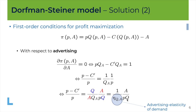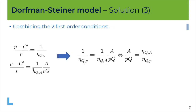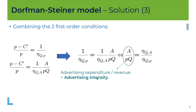Since the monopolist is choosing both price and advertising, at the optimum both first-order conditions must hold simultaneously. We have written them in the same form — with the same left-hand side — so if two equalities share the same left-hand side, their right-hand sides must be equal. Rearranging, we put the advertising intensity on the left-hand side. The advertising intensity is the ratio between advertising expenditure and revenue — price times quantity — giving a measure of what you can gain through advertising: for each euro spent in advertising, the corresponding sales obtained.